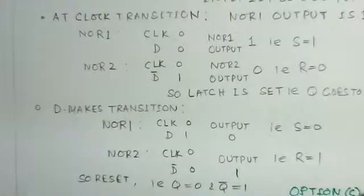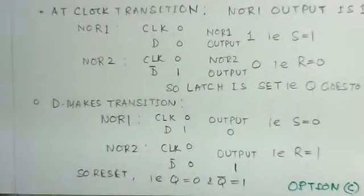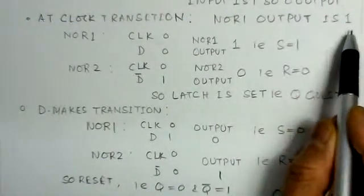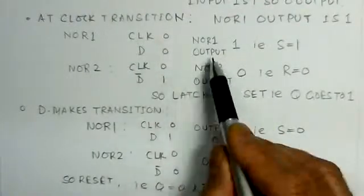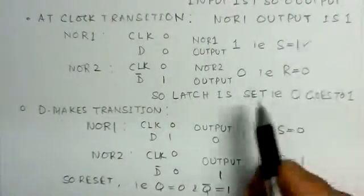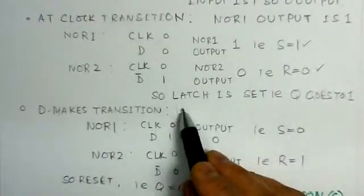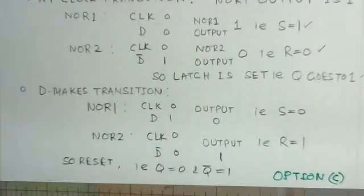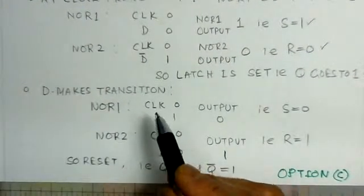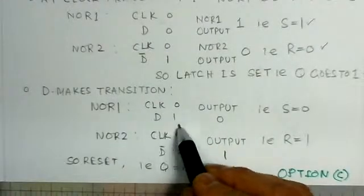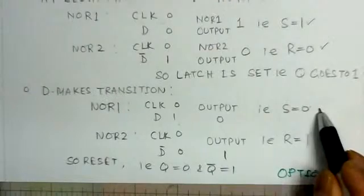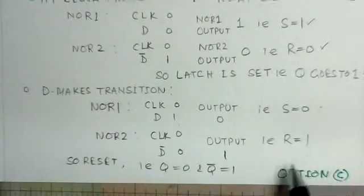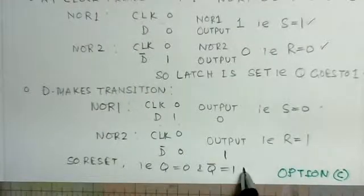To summarize: at the clock transition, NOR gate output gives R=1, so the latch is set — Q=1. When D makes its transition to 1, the clock is 0 and D=1, so the NOR output gives S=0 and R=1 — reset is active. Reset active means Q output goes to 0 and Q-bar goes to 1.